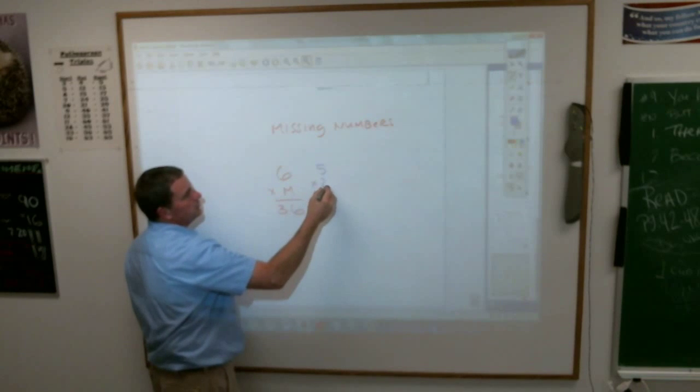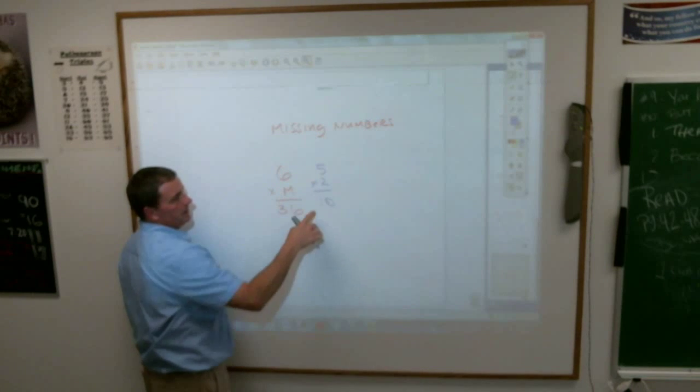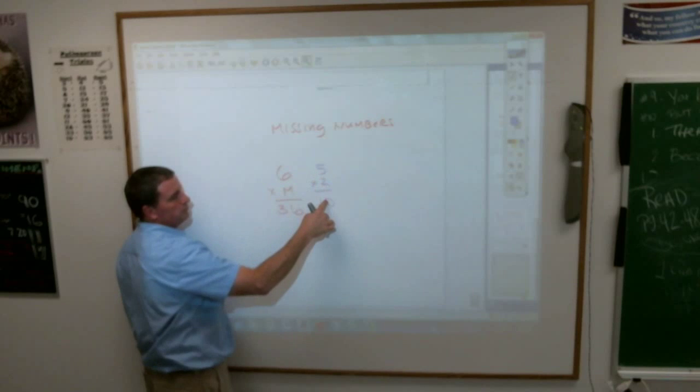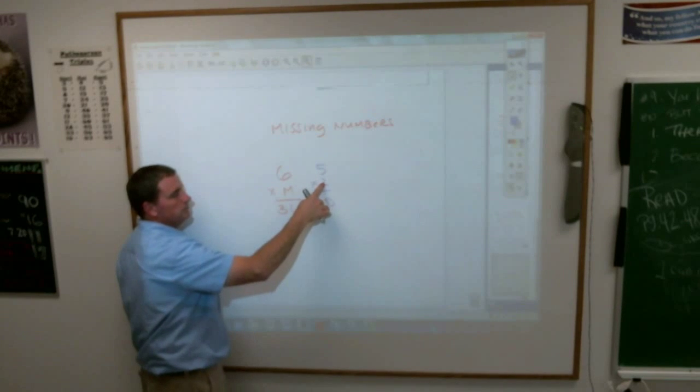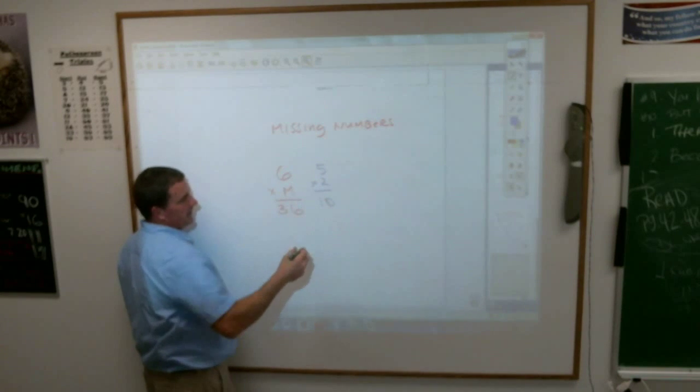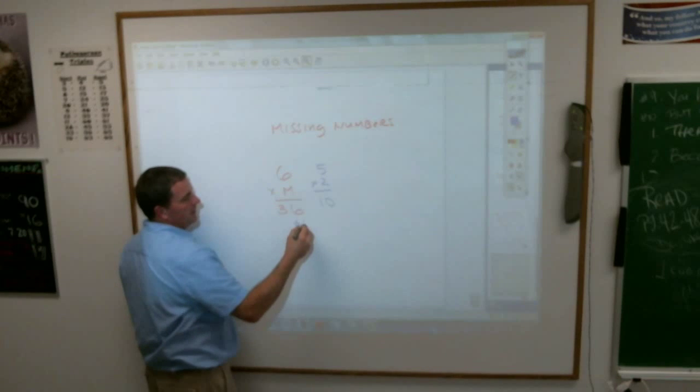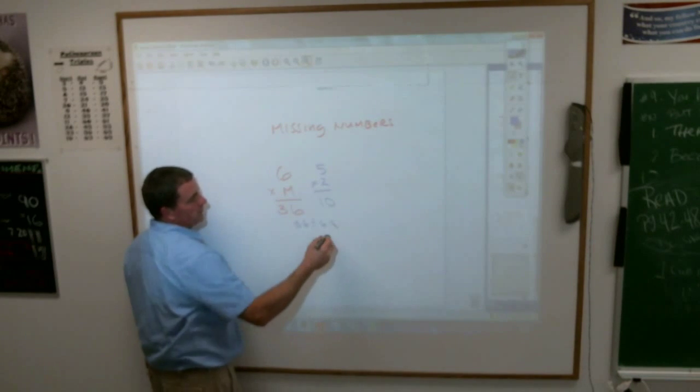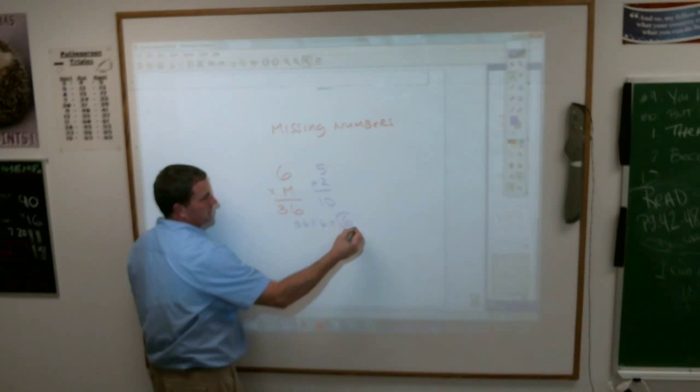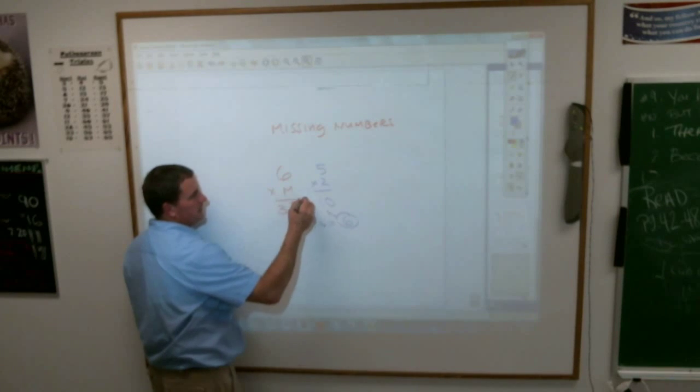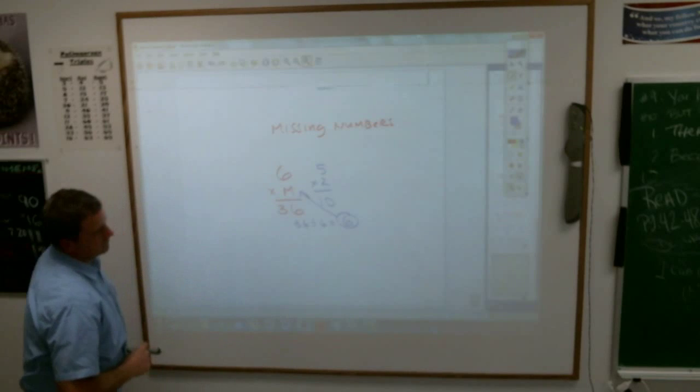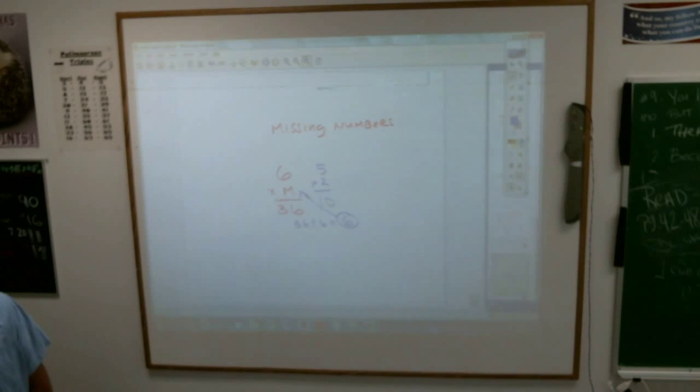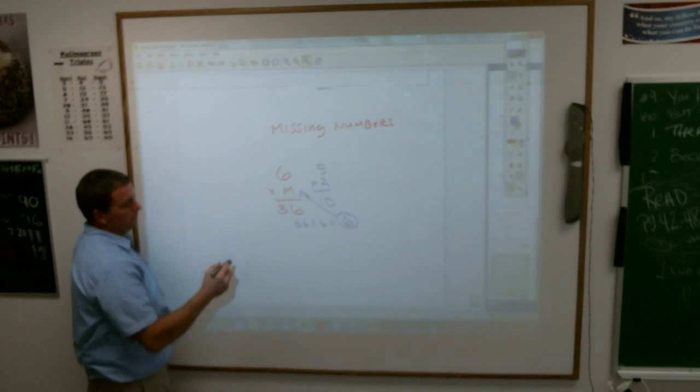Think of an easy multiplication problem. Maybe it's five times two equals ten. If I'm missing this two, what do I do with five and ten to get two? Divide. Divide, and that's the same thing you'll do here. The nice thing with multiplication is you'll always divide when you're missing one of those two things. So your answer should be six, because thirty-six divided by six is six.